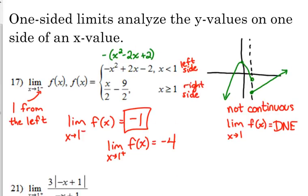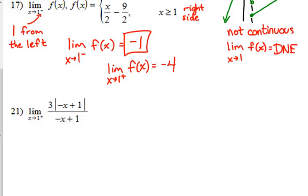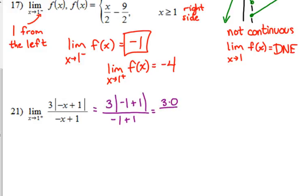Number 21 is not a piecewise function as it is written, but recall when we did absolute value functions we wrote them as piecewise functions. This wants us to evaluate the limit from the right as x approaches 1. If we just plug in 1, we get negative 1 plus 1 equals 0 on top, and 3 times 0 over negative 1 plus 1 equals 0 on the bottom. That's 0 over 0, which is what we call an indeterminate form.